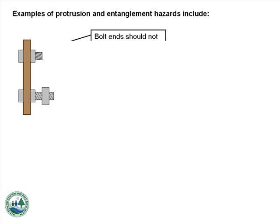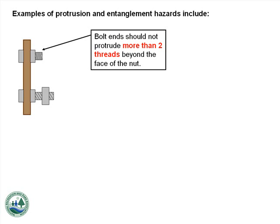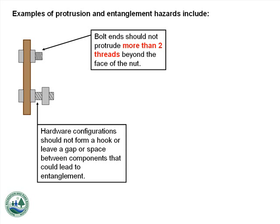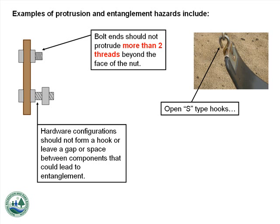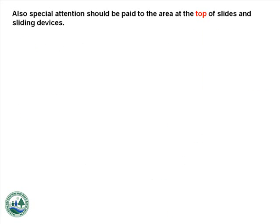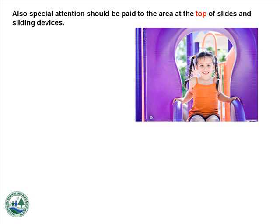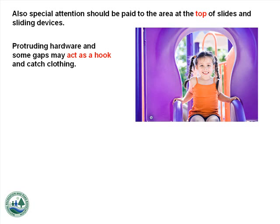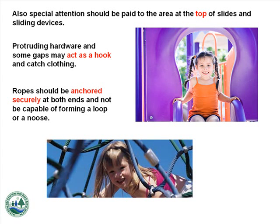Examples of protrusion and entanglement hazards include bolt ends that extend more than two threads beyond the face of the nut, hardware configurations that form a hook or leave a gap between components, open S-type hooks, and rungs or handholds that protrude outward and may be capable of penetrating the eye socket. Special attention should be paid to the area at the top of slides. Ropes should be anchored securely at both ends and not be capable of forming a loop or a noose.